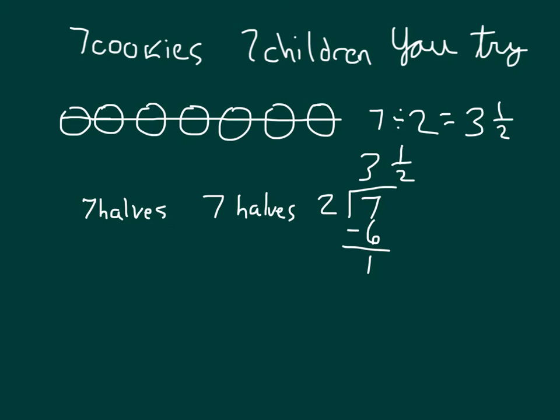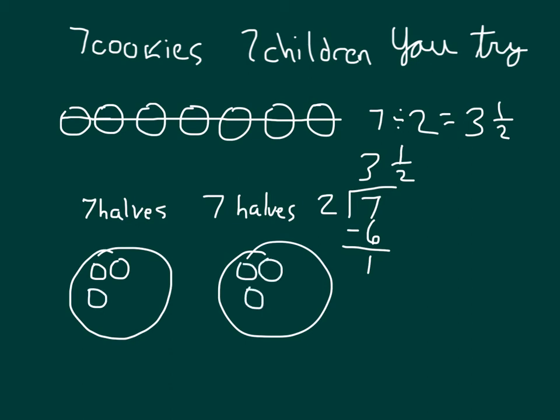You might have grouped it as before, where it is that first person would receive one, two, three cookies. Second person would also receive three cookies. And then we are only at six cookies so far. And then so, each of the people would still have to receive that other half of the cookie that is not split up yet.